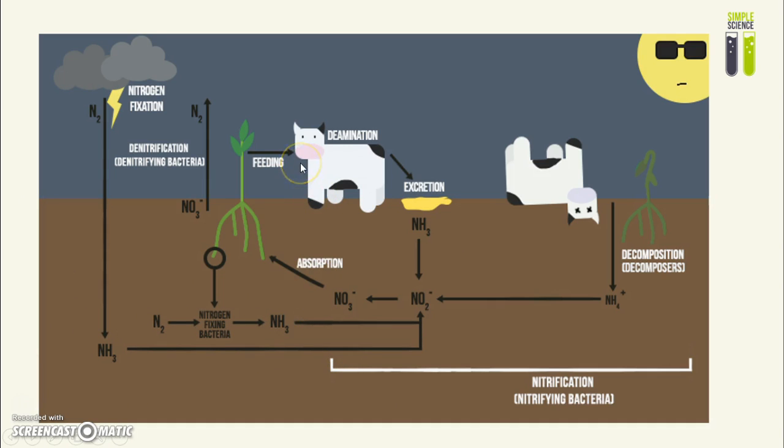And then next, we have feeding of plants to animals, such as cows. And then the animal will get all of the plant proteins. And as a result, it would have to deaminate some of it. And if you recall from the digestion topic, deamination essentially means you're removing the amine group from the protein. And then you end up with urea, and you also end up with ammonia, as depicted here. And that is done through the process of excretion, which is when you remove it out of the animal, or specifically in this case, the cow's body.